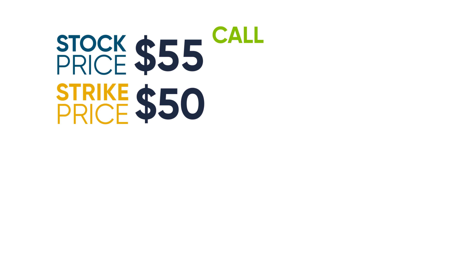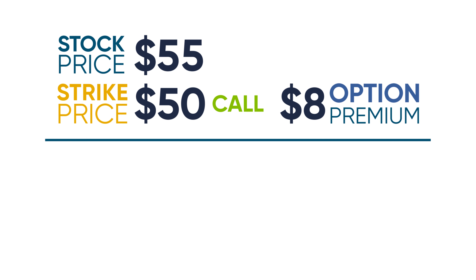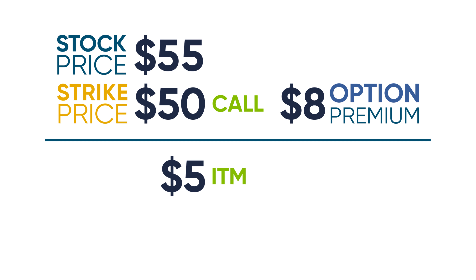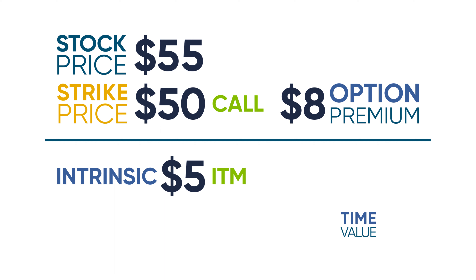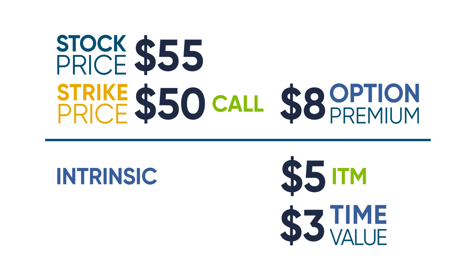Let's say we have a stock currently priced at $55 and a $50 call option on that stock priced at $8. Since the stock price is $5 above the strike price, this call is in the money by $5 and therefore has $5 of intrinsic value. But the quoted premium is $8, so the time value — or extrinsic value — is $3, which is the premium amount in excess of the $5 intrinsic value.